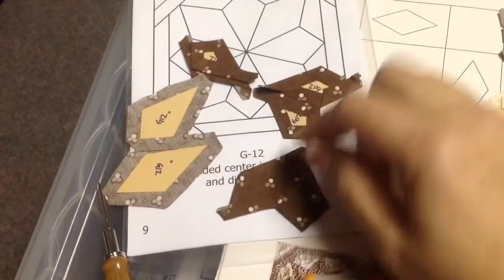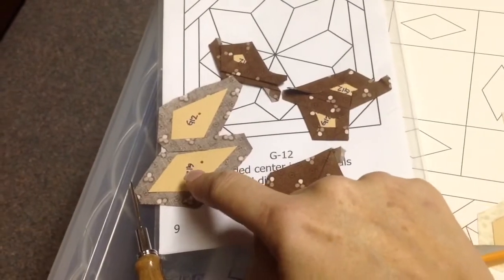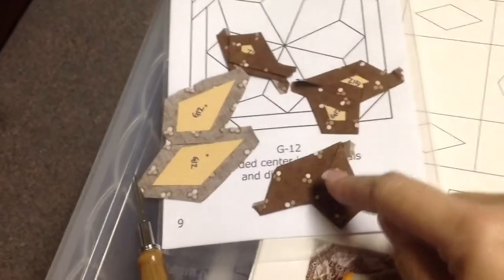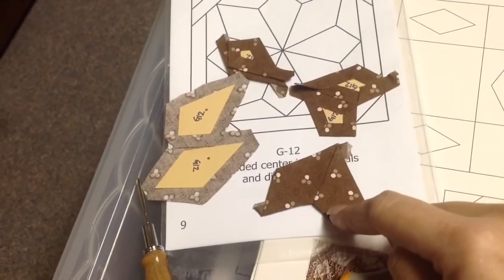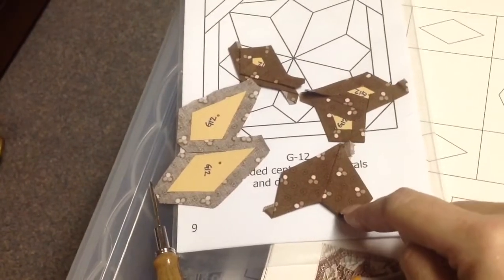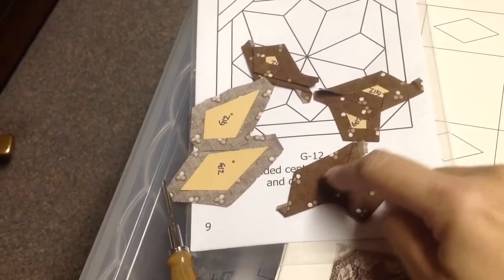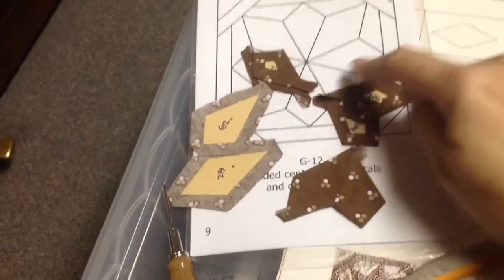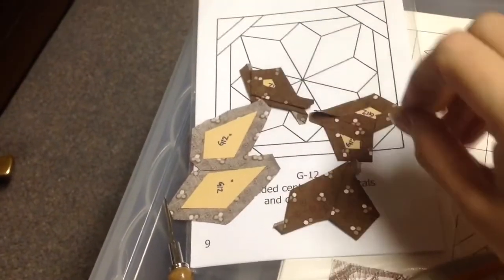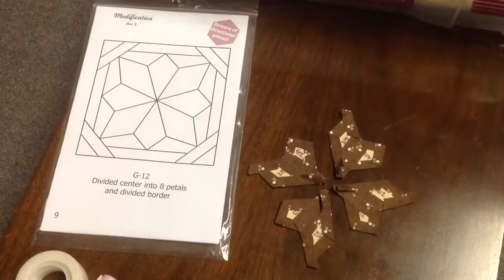If you have a directional fabric, you want to make sure that you make it all one direction. What I like to do usually is, if it's a stripe or something, I will make it so that it goes in each one, so then you have this radiation effect.